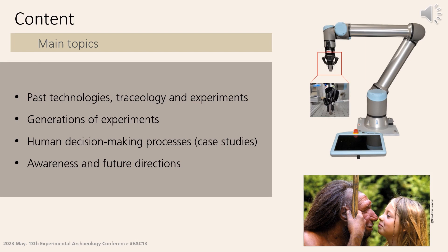Our talk today is organized into four main topics. First, we will briefly contextualize our research, highlighting the importance and relevance of experimental archaeology combined with the study of how tools were used to reconstruct and identify past human technologies. Second, we would like to describe and discuss in detail the different generations of experiments and how they relate to each other. Third, we will focus on second generations, illustrated by key recent case studies investigated in our laboratory. Finally, we would like to wrap up and stress out some of our results and our perspectives for the near future in the discipline.